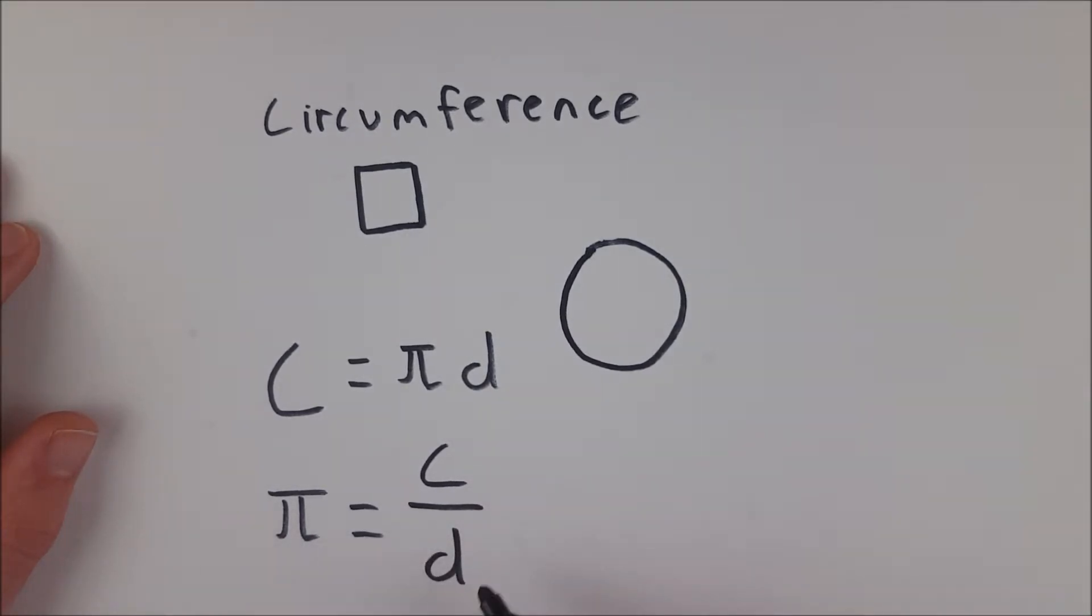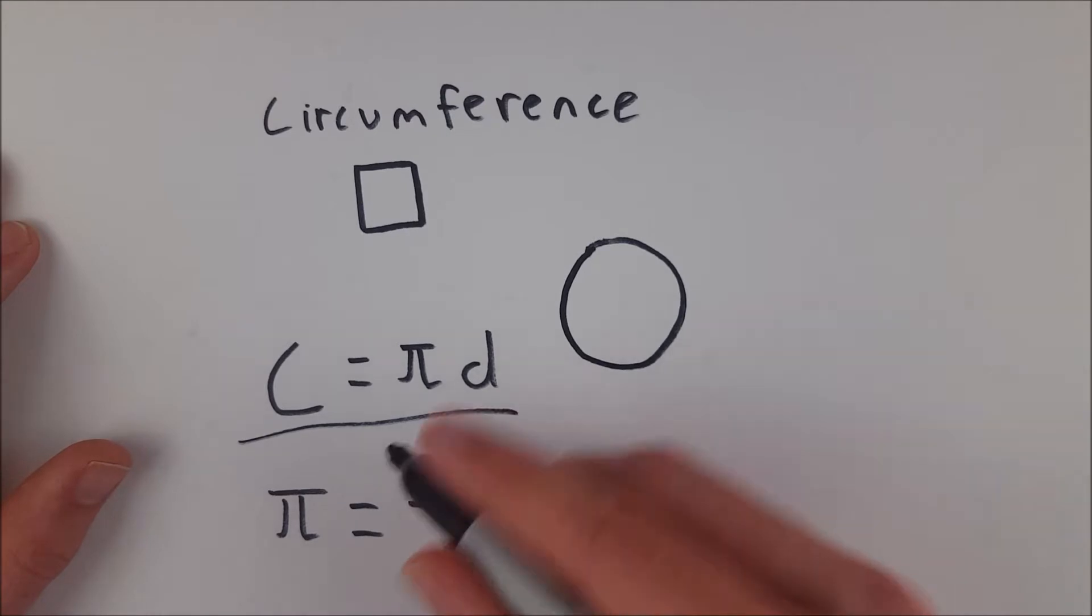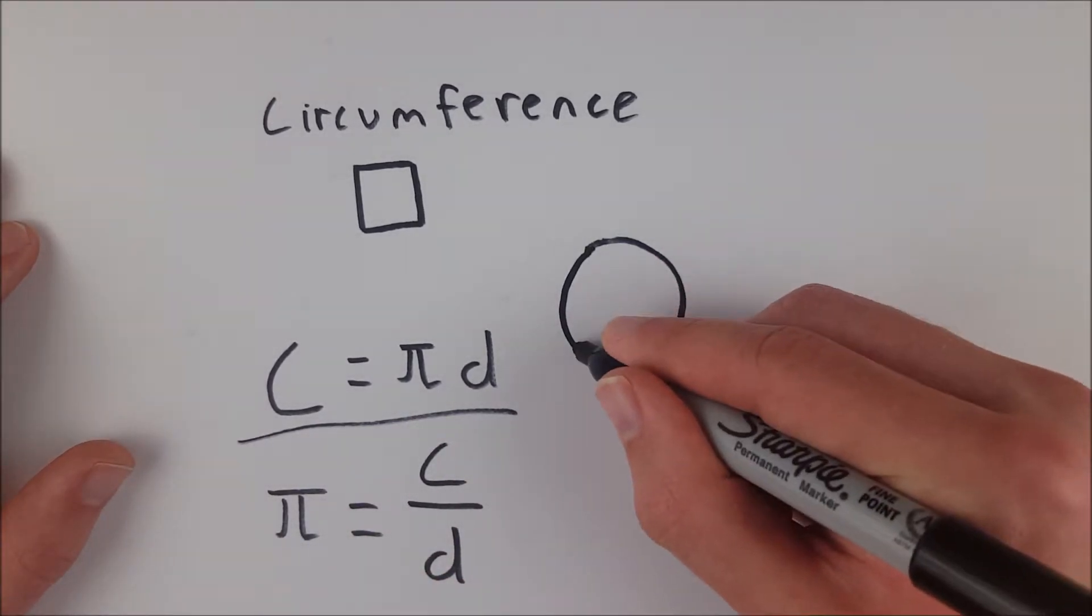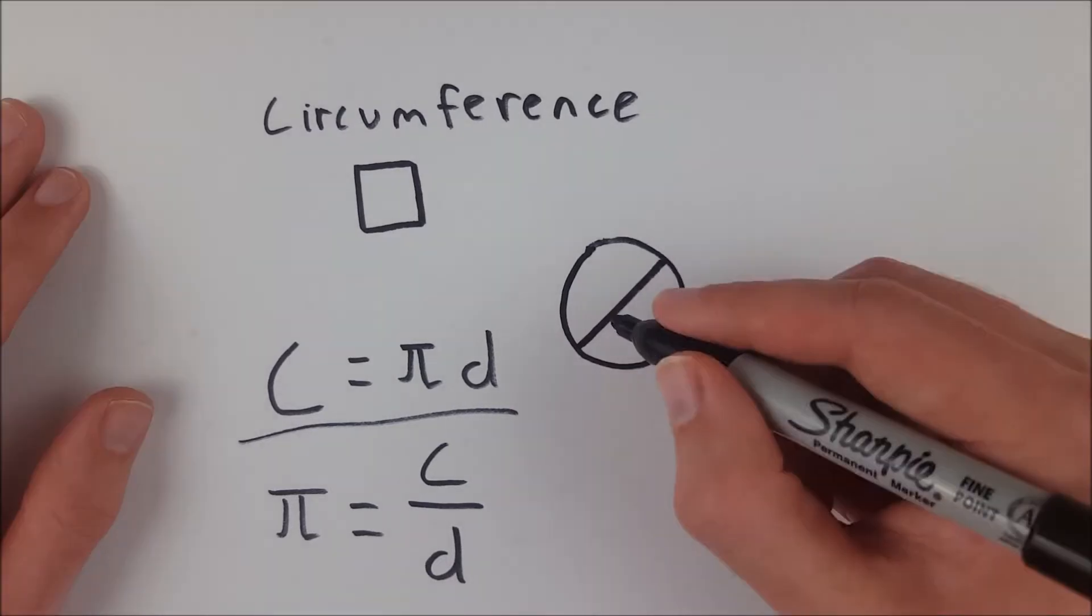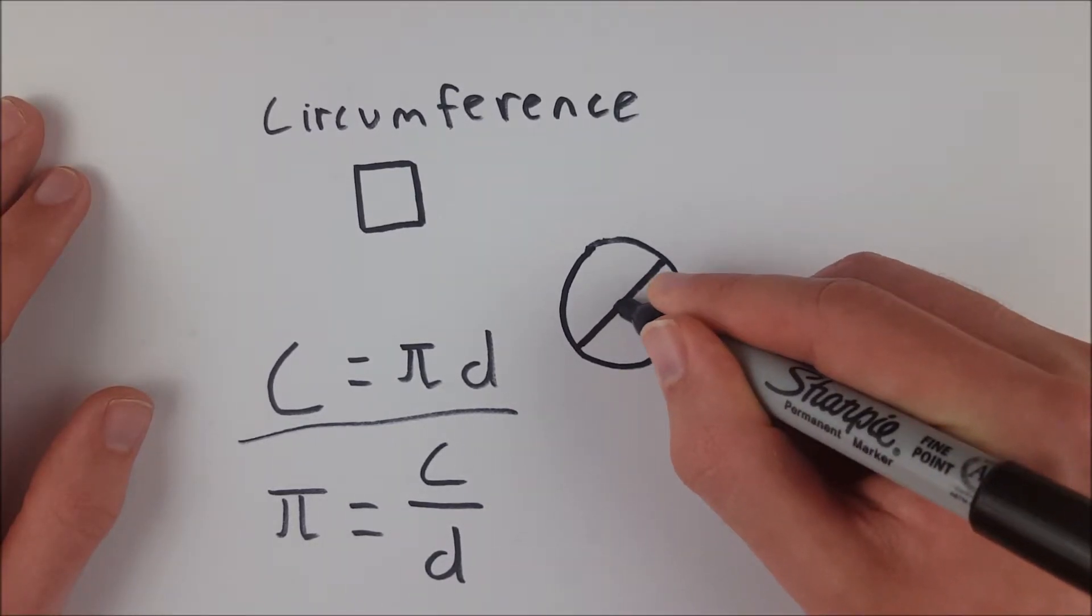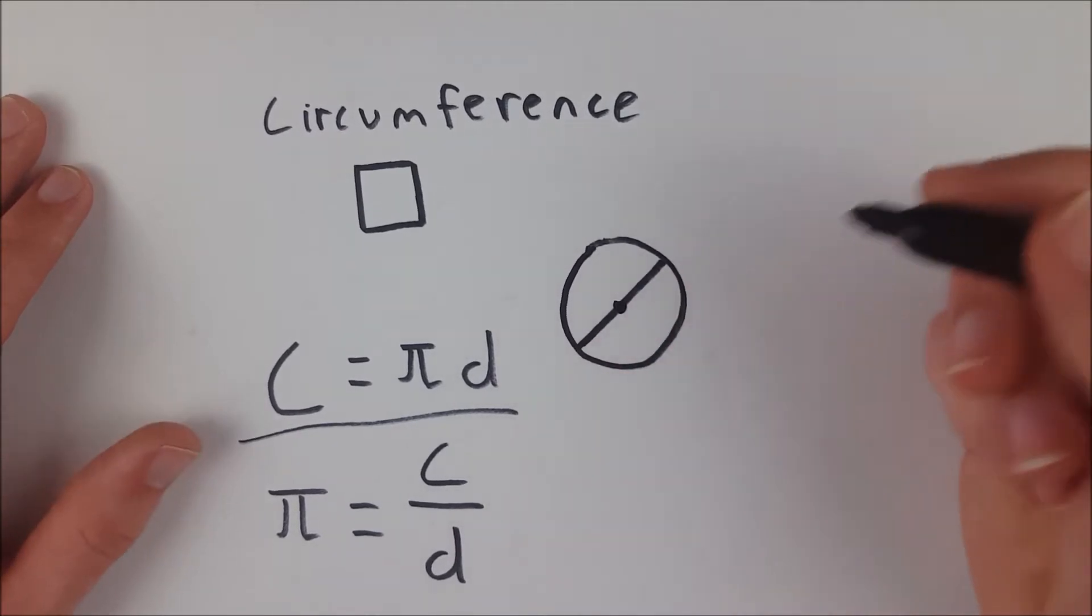So using this equality, we can multiply both sides by d and you get the formula for the circle circumference. So circumference is equal to pi times the diameter. And this line here is the diameter. It's a segment with both endpoints on the circle that passes through the center, which is right there.